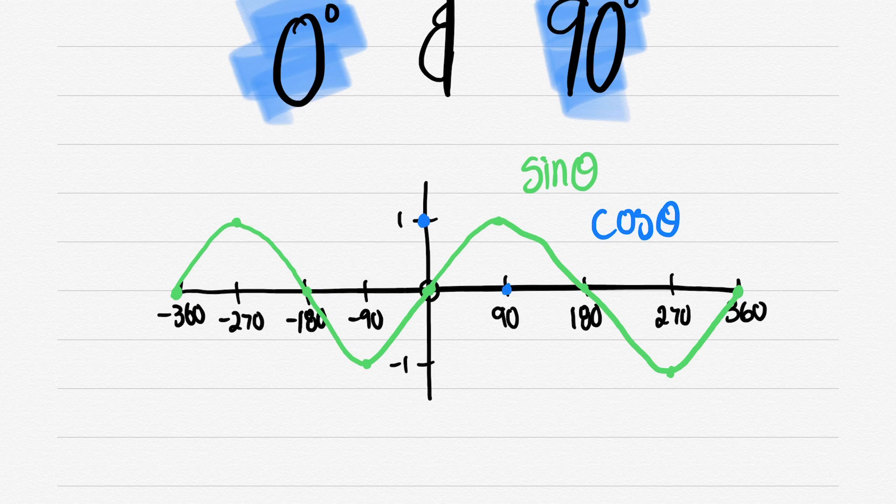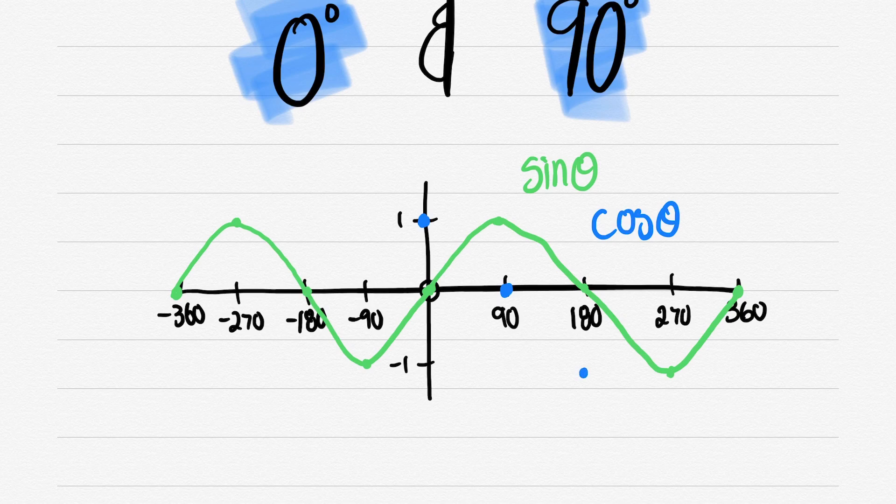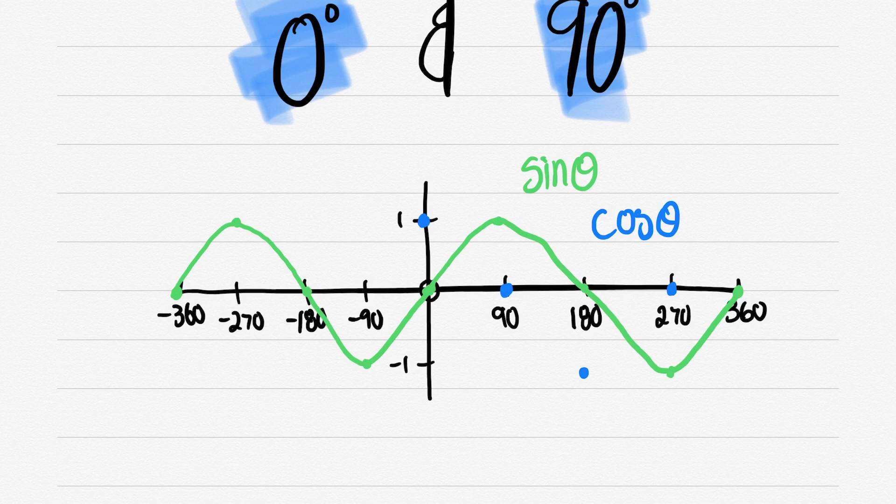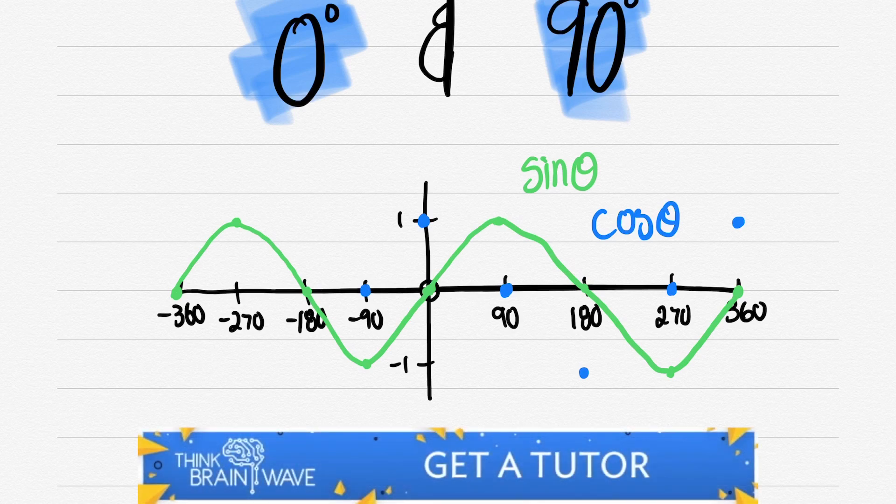Now look at cos. At cos 0° we have the answer 1. Cos 90° is 0. So it's almost like if you look at it, the cosine graph has somewhat shifted. But let's not jump to conclusions. Let's continue with our points.